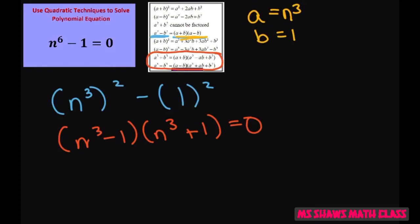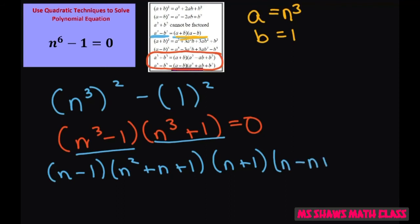So for the first one, this is going to be n minus 1 times n squared plus n plus 1. This one is going to be n plus 1 times n squared minus n plus 1 equals 0.